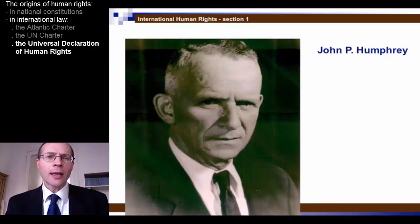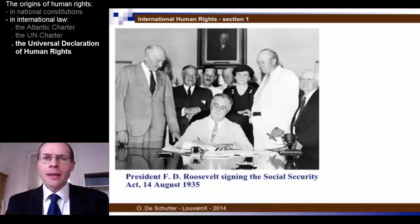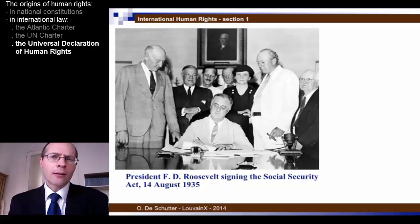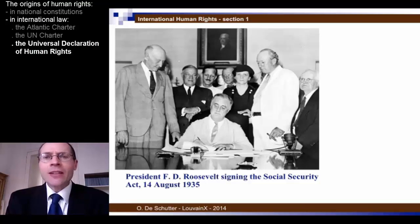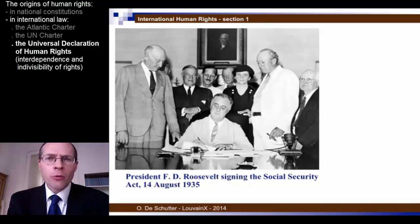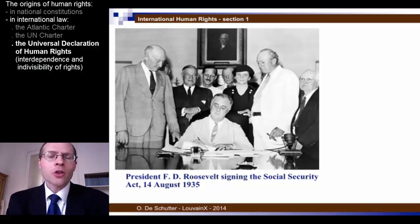We will return to this point in the remainder of this course. It's important to note that the Universal Declaration of Human Rights was important because it listed in its 30 articles both civil and political rights and economic, social and cultural rights. The idea of interdependence, indivisibility, and equal importance of all human rights — whether civil and political or economic, social and cultural — was very much present in the discussions that led to its adoption.